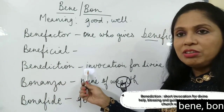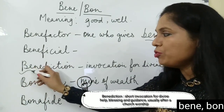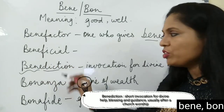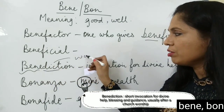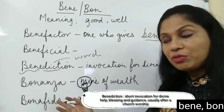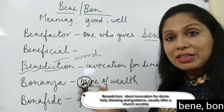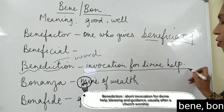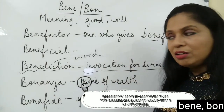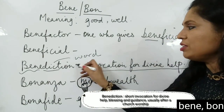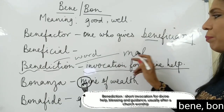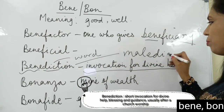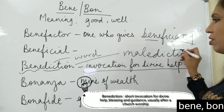Benediction is made up of two root words: bene and dict, which means word. Good words — what are good words? Good words are blessings or prayers, an invocation for divine help. The opposite of this word would be formed by prefixing mal to it: a malediction would be bad words or a curse.